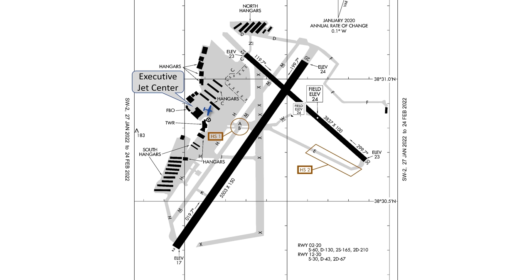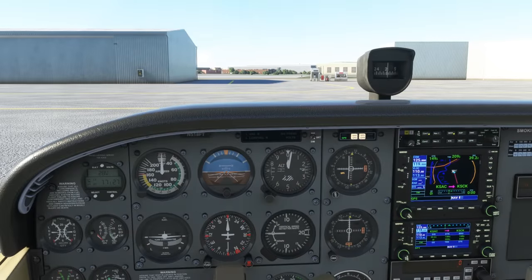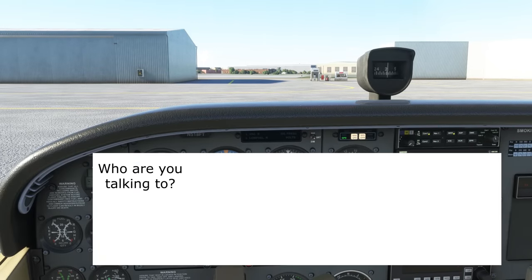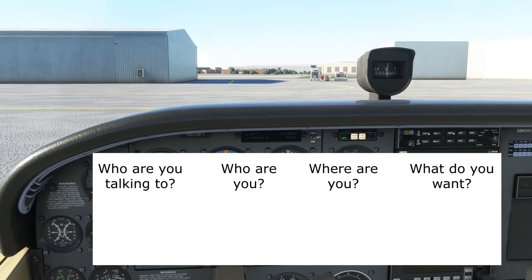From here, we would expect to be told to taxi out from the ramp to the long parallel taxiway Mike, take a left, cross runway 12 — which we would need explicit instructions to do — and then turn right on Delta to the hold short for runway 20. With that as the expectation, let's think about our first call to ground. The old format will apply: who are we talking to, who are we, where are we, what do we want?